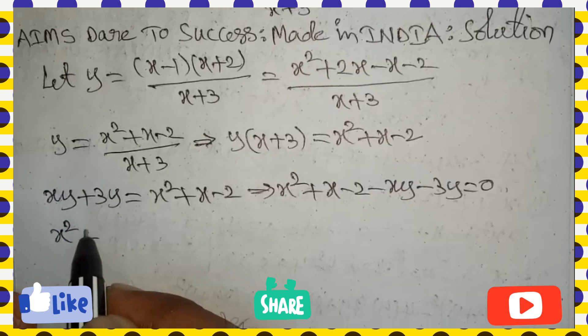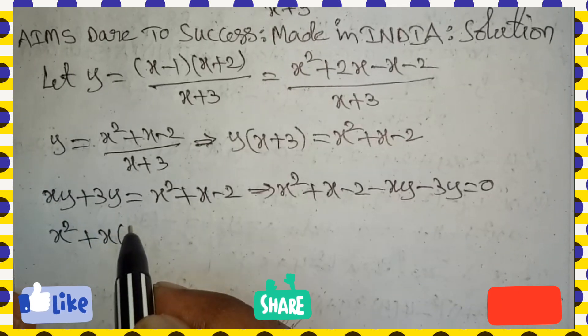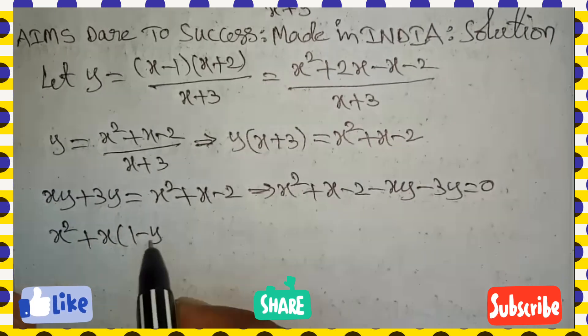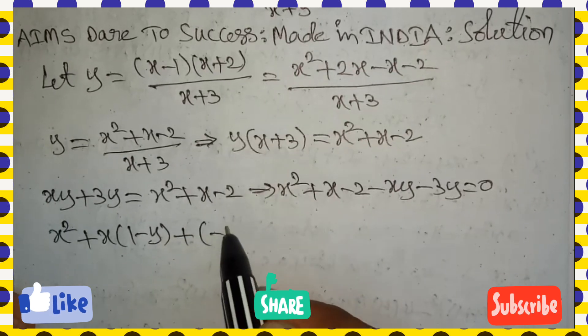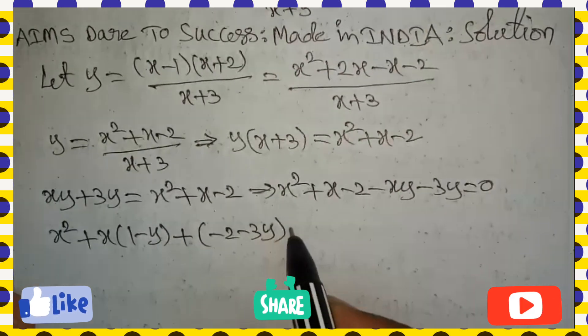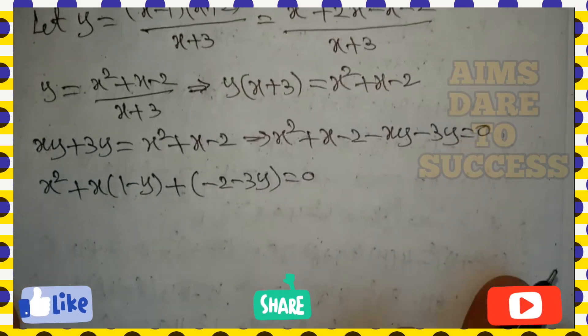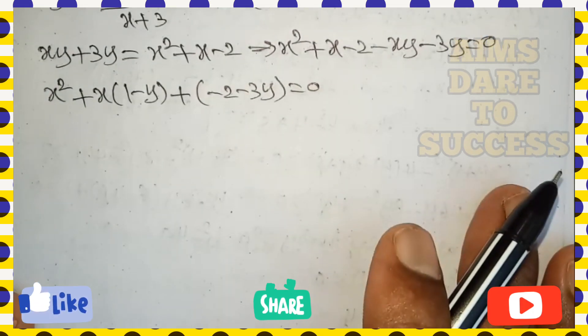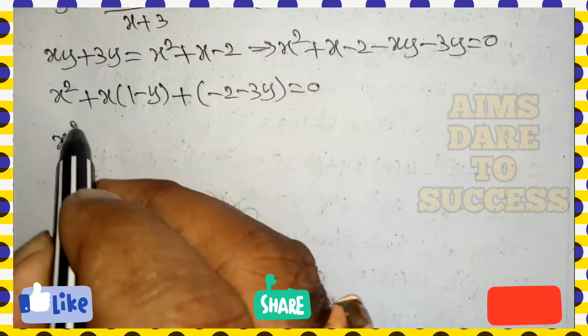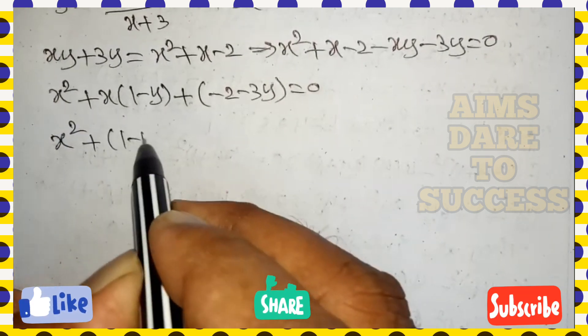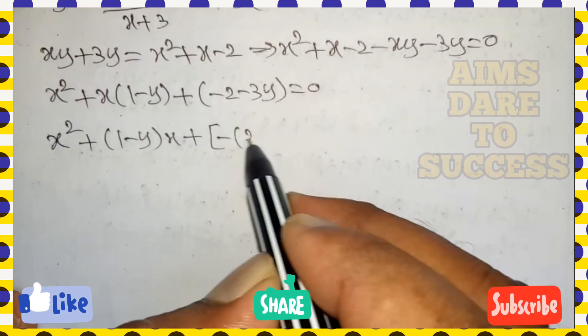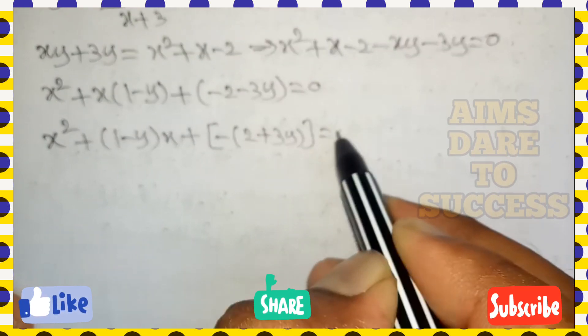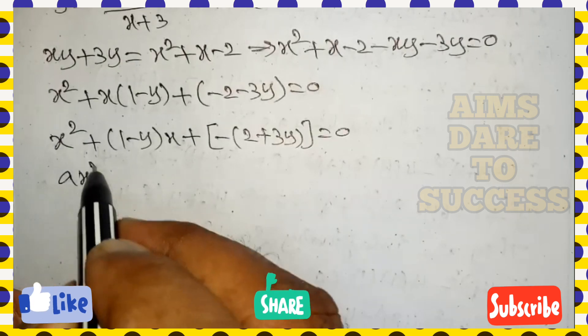Take x square, after that take x common: (1-y), after that remaining two values you can write as plus of minus 2 minus 3y equals 0. So this part can be written as quadratic equation: x square plus (1-y)x plus of minus 2 minus 3y, minus common, after that minus of 2 plus 3y equals 0.